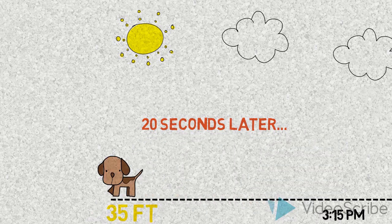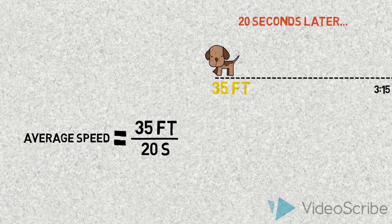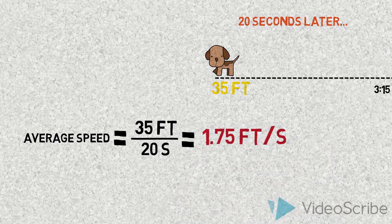At what average speed was he traveling? To find out, we divide 35 feet over 20 seconds and we find out that he was traveling at 1.75 feet per second.